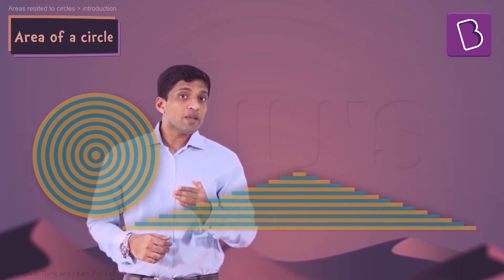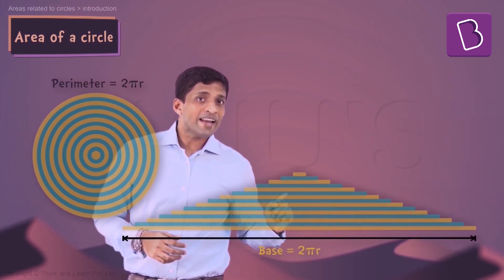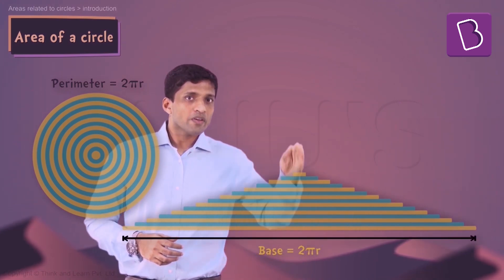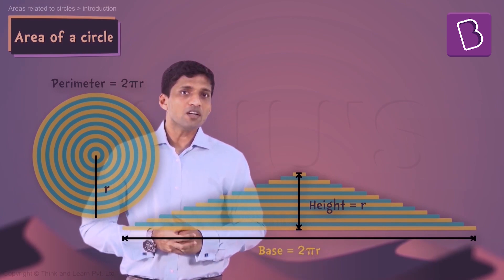The outermost circle perimeter if it is 2πr, the bottom line length will be 2πr. And the height here will be nothing but the radius of the outermost circle.